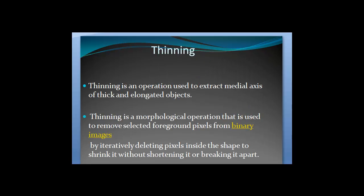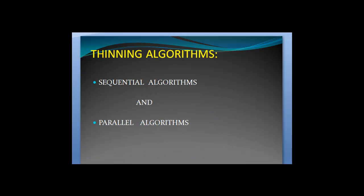Thinning is an operation used to remove the unnecessary pixels of an image. There are two types of thinning algorithms: the sequential algorithm and the parallel algorithm. In our case, we use the parallel algorithm.